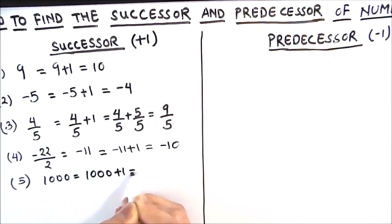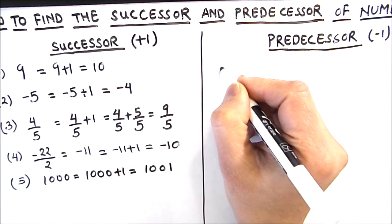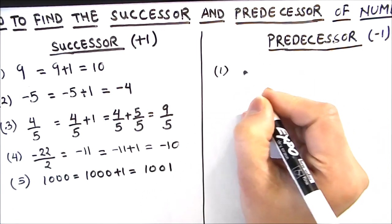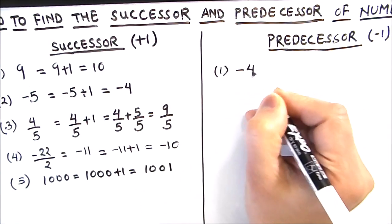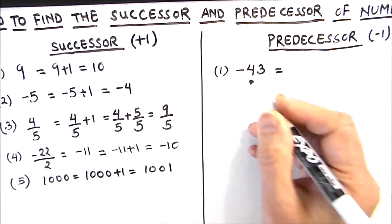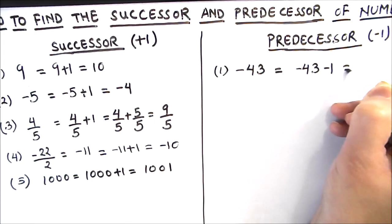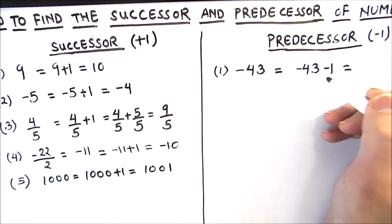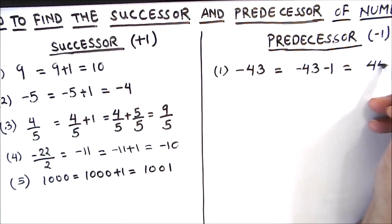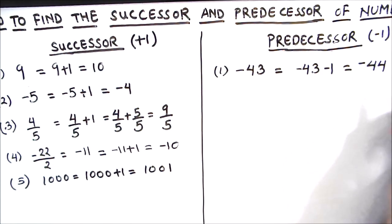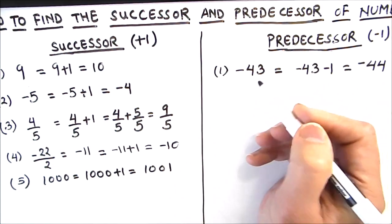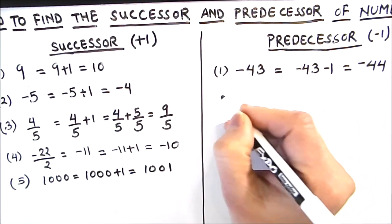Now let's move on to finding the predecessor of different numbers. Our first number is negative 43. For finding the predecessor, we subtract 1 from negative 43. When the signs are the same, we add the two numbers, giving us 44, and the sign remains negative, so the predecessor of negative 43 is negative 44.